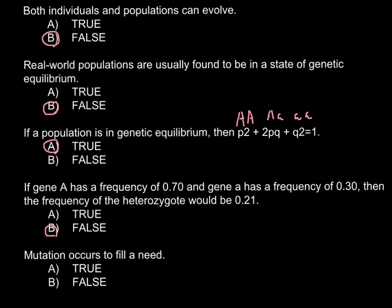according to this formula, Hardy-Weinberg formula, the frequency of the heterozygous would be 2 multiplied by p, and according to this statement, this is 0.7.